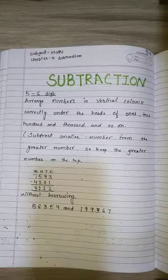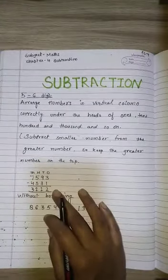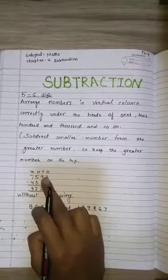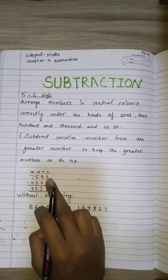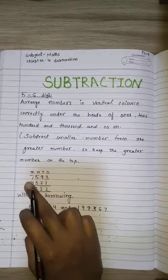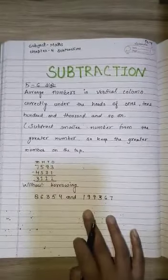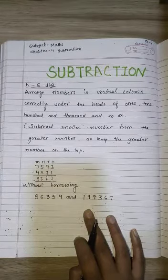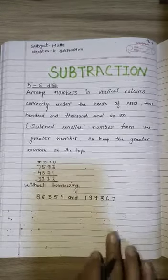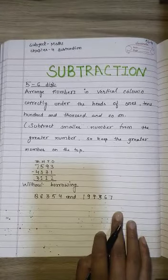As an example we have taken a four and five digit number to show how to arrange according to place value: ones, tens, hundreds, and thousands. Now we have to start writing five and six digit numbers — first without borrowing, then with borrowing.